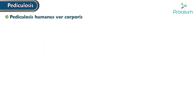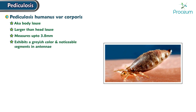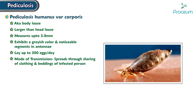Now let's talk about Pediculosis humanus var corporis, also known as the body louse. It is larger than the head louse, measuring up to 3.8 millimeters, and exhibits a grayish color with noticeable segments in the antennae. As for its reproductive behavior, the body louse can lay up to 300 eggs per day. The infection commonly spreads through sharing of clothing and beddings of an infected person.